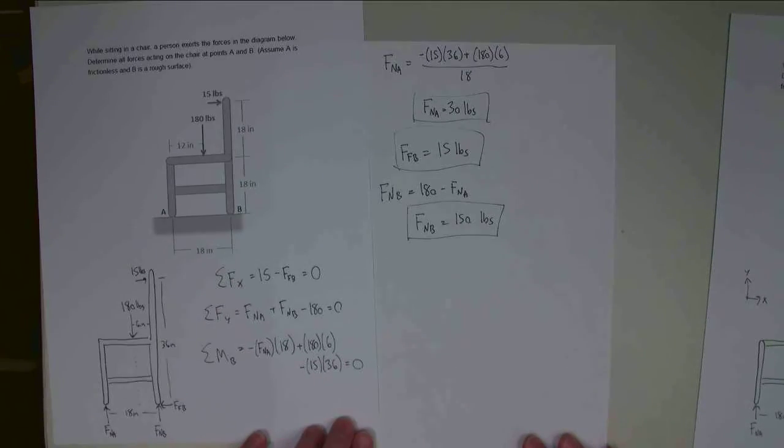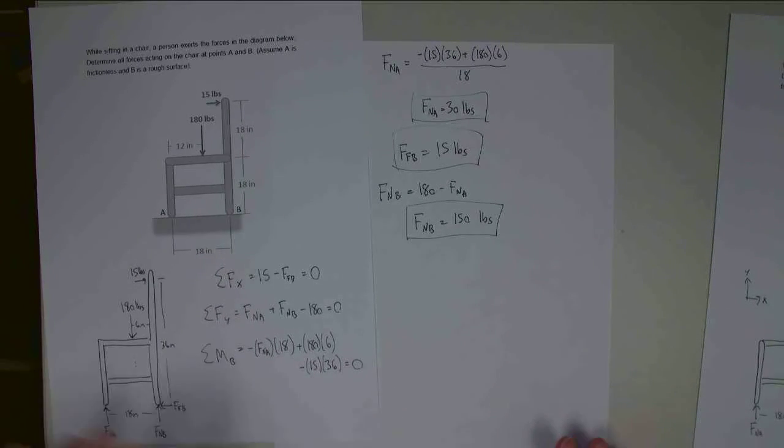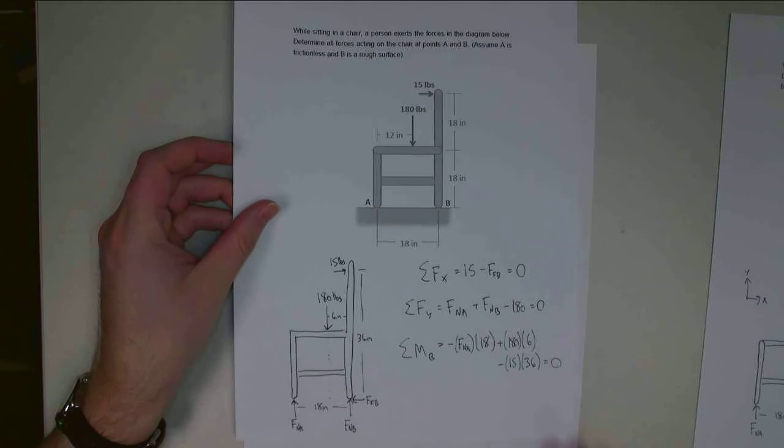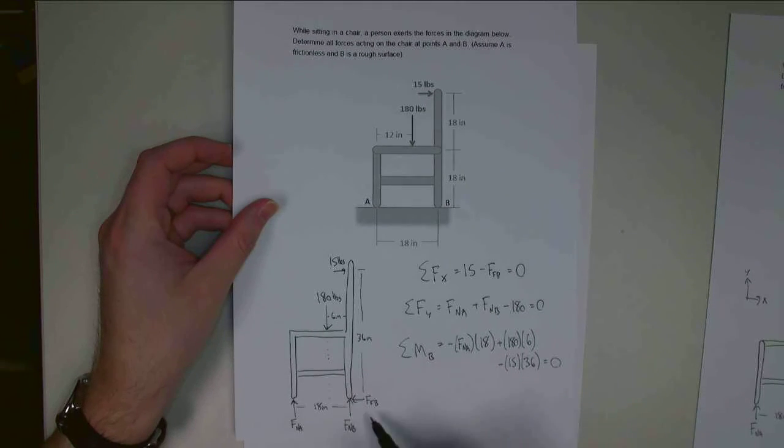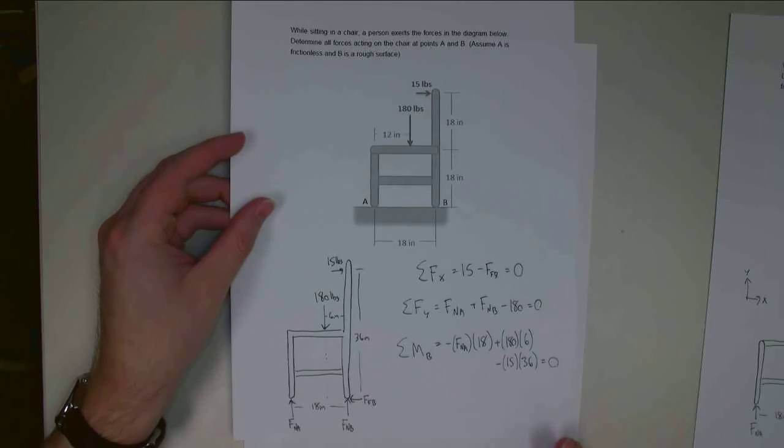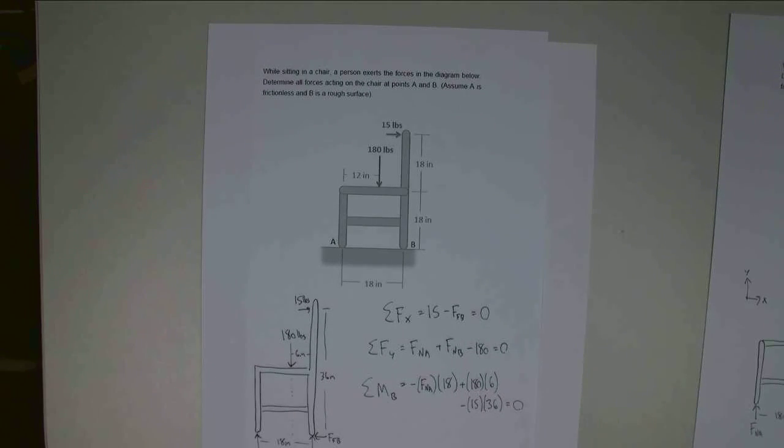And so with that, I've solved for my three unknown forces. This is the normal force at point A and point B, as well as the friction force at the back leg there. So with that, thank you for watching, and I hope to see you again.